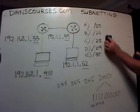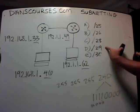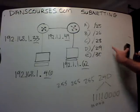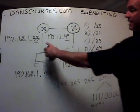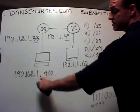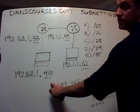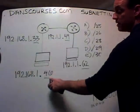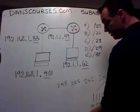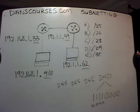If we were to go to slash 29, the networks would be size eight, and these addresses are more than eight numbers apart — 46 minus 33 is more than eight numbers apart — so that would not work.